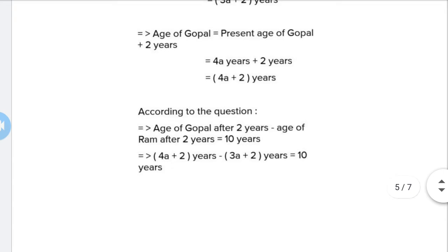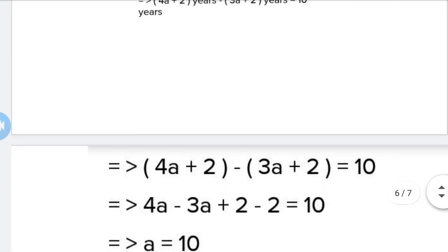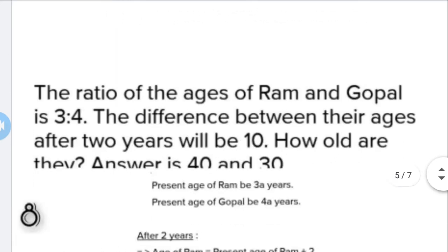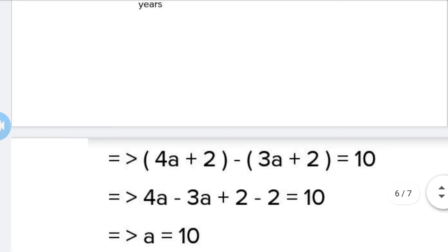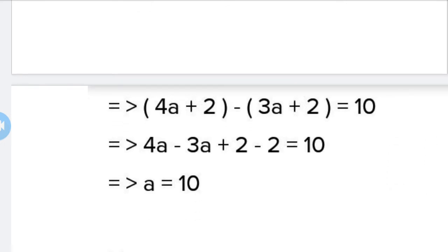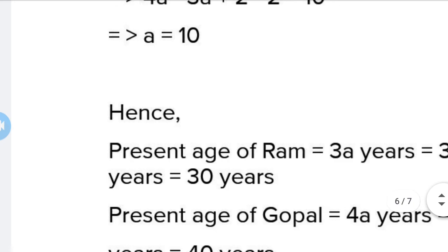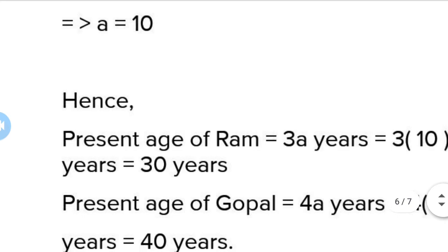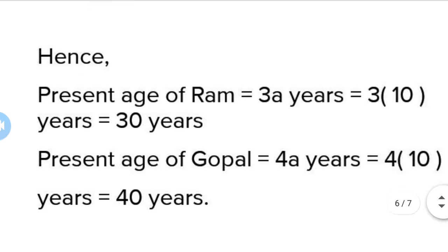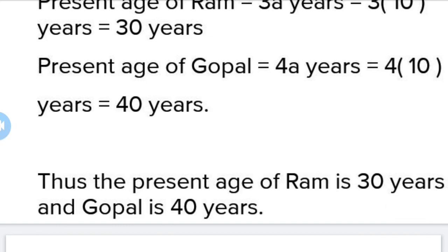The difference equals 10. We make the equation: (4a plus 2) minus (3a plus 2) equals 10. When we solve that equation, we get a equals 10. Hence, present age of Ram is 3a years, which is 3 times 10, so 30 years. Present age of Gopal is 4a years, so 4 times 10 equals 40 years.